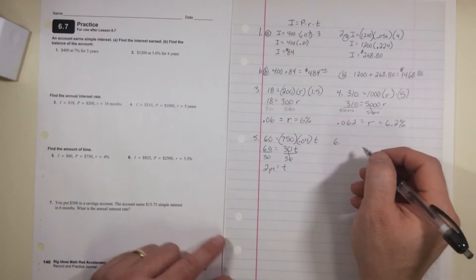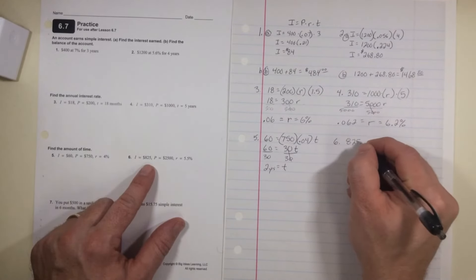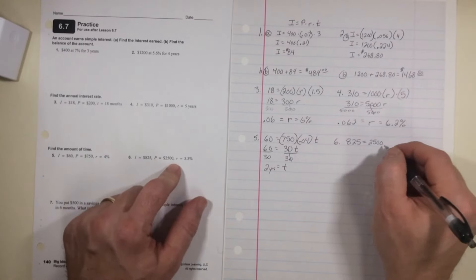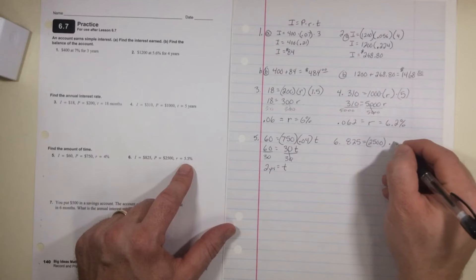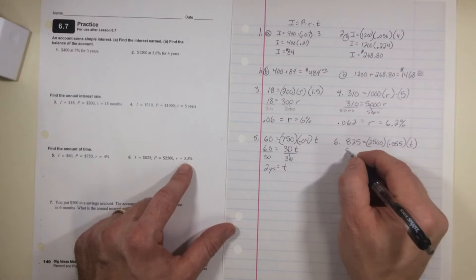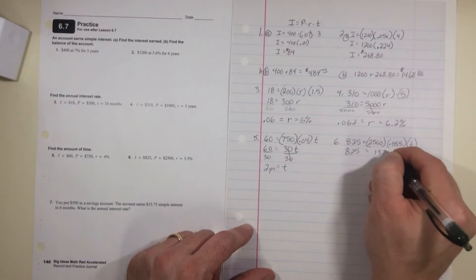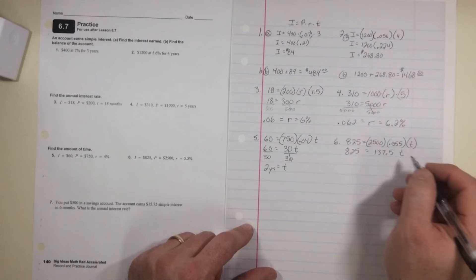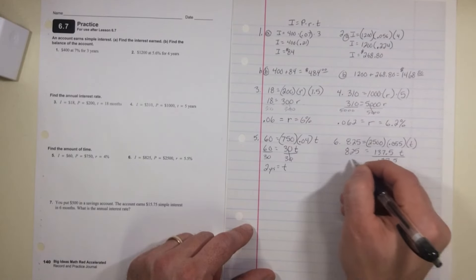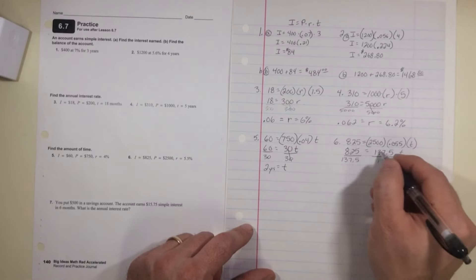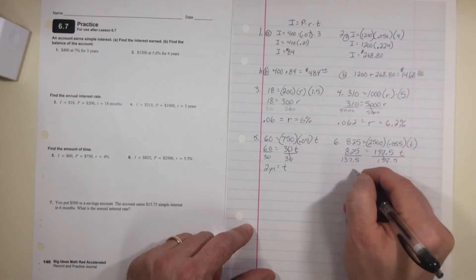Number 6, $825 equals $2,500 times 0.055 times the time. And obviously, $2,500 times 0.055 would equal $137.50. I did not just use a calculator, in case that's what you were thinking. Divide both sides by $137.50, and T equals 6, so 6 years.